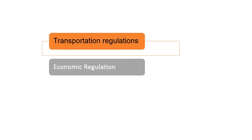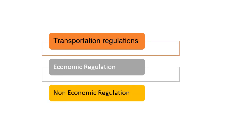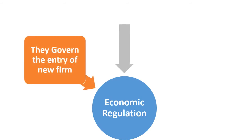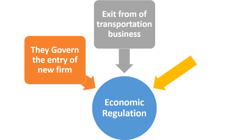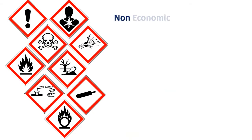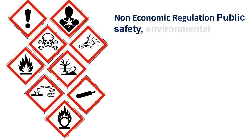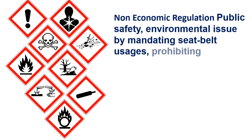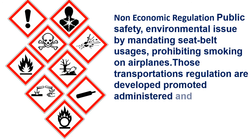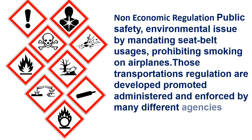Transportation Regulations are Economic Regulation and Non-Economic Regulation. Economic Regulations govern the entry of new firms, exit from the transportation business, and rules of freight rates. Non-Economic Regulations address public safety and environmental issues, such as mandating seat belt usage and prohibiting smoking on airplanes. These transportation regulations are developed, promoted, administered, and enforced by many different agencies.